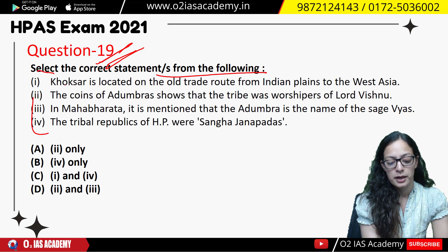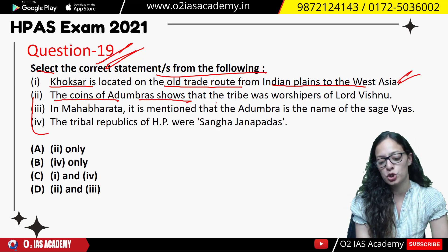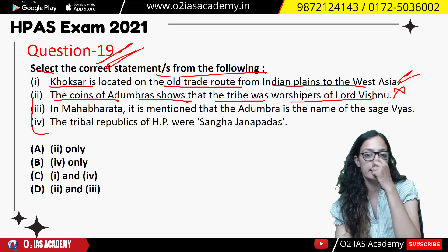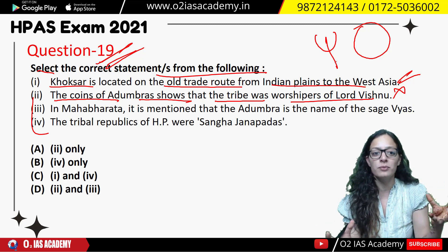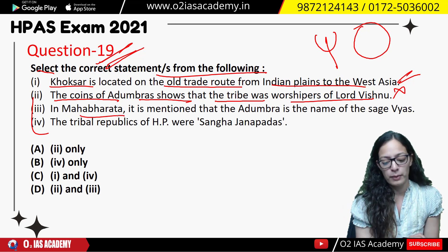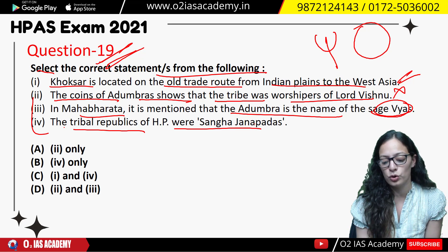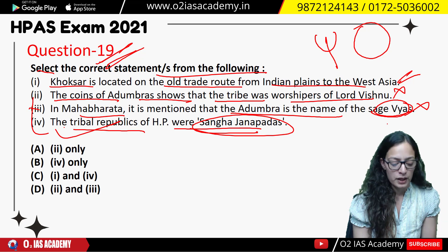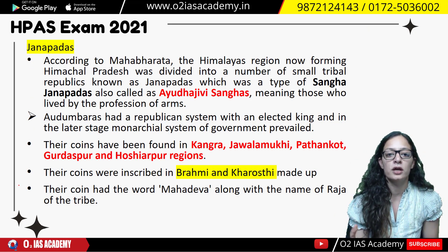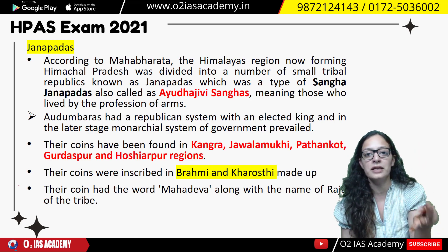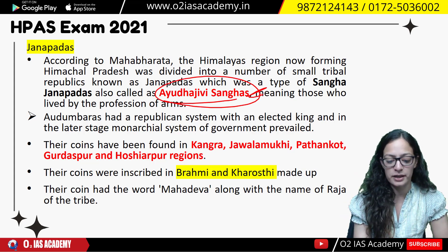Question 19 had four statements about ancient history. First: Koksar falls on the old trade route. Third: in the Mahabharata, odd numbers are mentioned in the name of sage Vyasa — incorrect. Fourth: tribal republics of Himachal are called Sangha Janapadas — correct. Since incorrect was asked, the answer is first and fourth only. Regarding Sangha Janapadas — when Kulinda Mahajanapada broke up, four main Janapadas were formed: Kulinda, Kullu, and Trigart among them. They are called both Ayudh Ji and Sangha Janapadas.